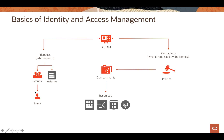You have users with certain IAM credentials and there are groups. Permissions are given through policies. Authentication is done using username/password and IAM credentials like API signing keys. Authorization is done by defining specific privileges in policies and associating those policies with groups or compartments. Policies are comprised of one or more statements which specify who can access which resources and how.